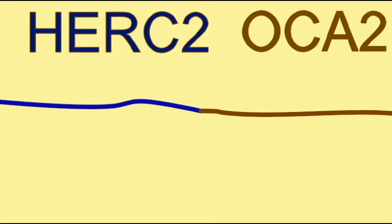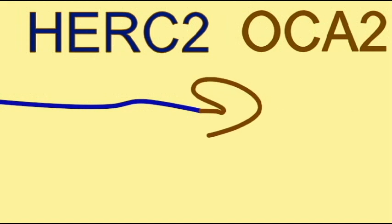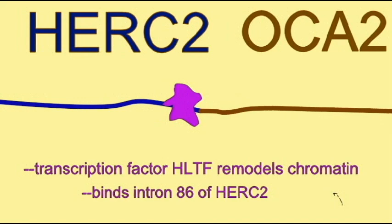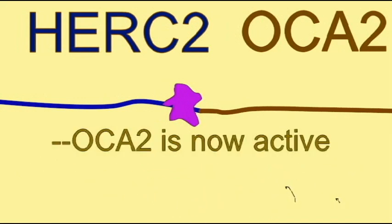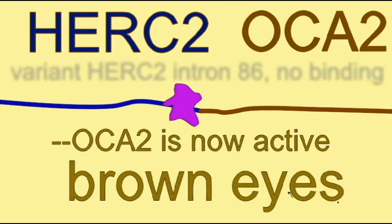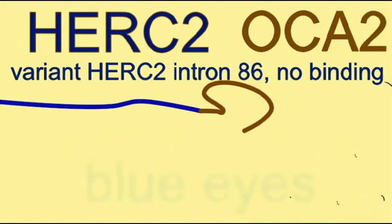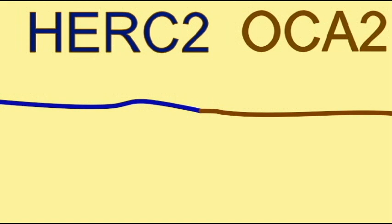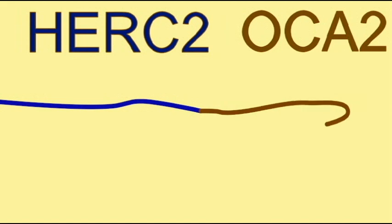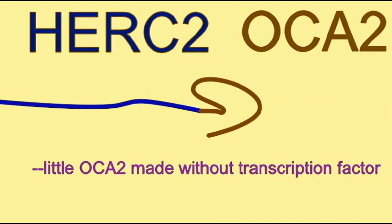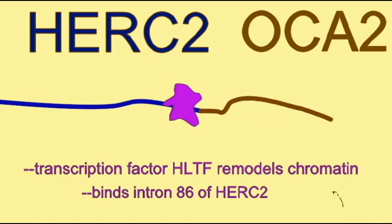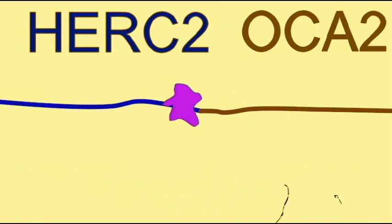The gene OCA2 is needed for the trait of brown eyes. This gene requires a transcription factor to be made, which will cause the DNA to unwind to the point where the gene can be activated. This transcription factor binds to the adjacent gene known as HERC2. So if this transcription factor can bind to HERC2, OCA2 is produced and brown eyes result. However, some changes to the HERC2 gene may mean that the transcription factor cannot bind. If the transcription factor cannot bind, then very little OCA2 is made and blue eyes result. So blue eyes can result not only from changes to the OCA2 gene, but also to the HERC2 gene, which is adjacent to it.